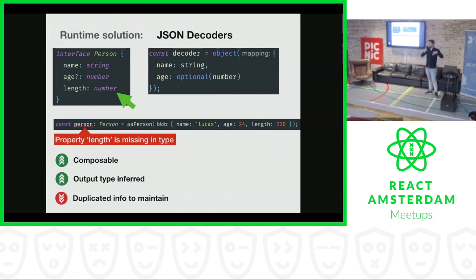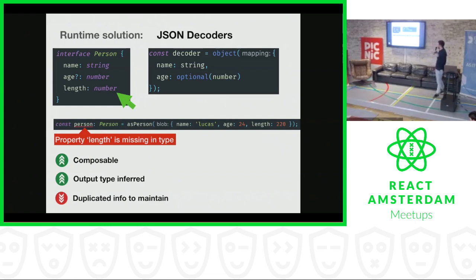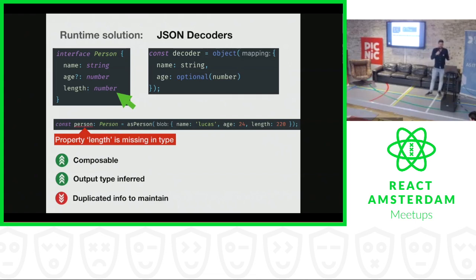And what's not so nice about JSON decoders is that you're defining duplicate information — because now we have an interface to maintain and a decoder to maintain, and they both contain the same info about which properties there are and what the types are.